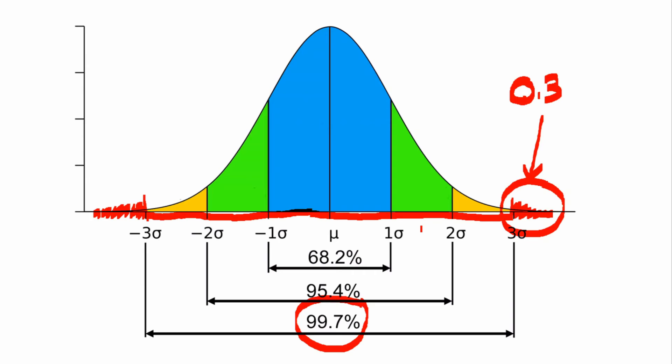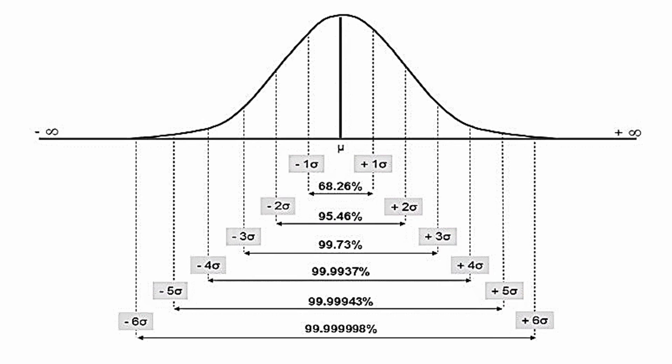Many industries are operating at 3 sigma levels, meaning 99.7% of their processes are within 3 standard deviations. 6 sigma, however, means operating at 6 standard deviations from the mean. To understand 6 sigma, we have to go further as follows.